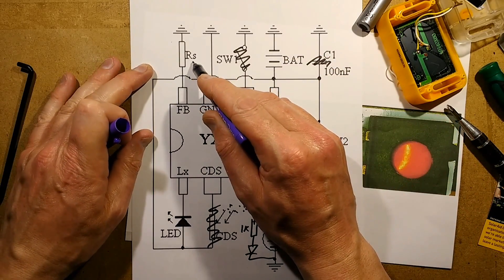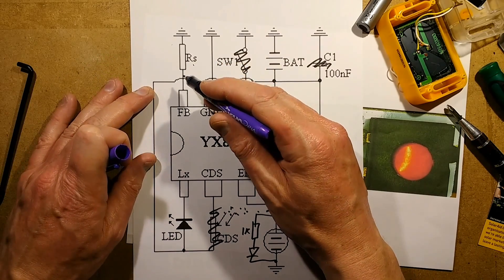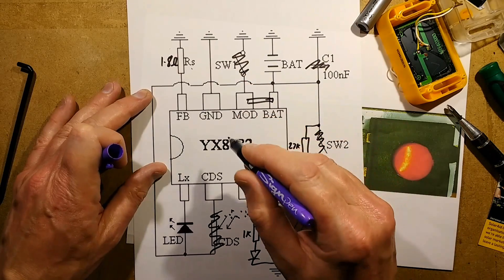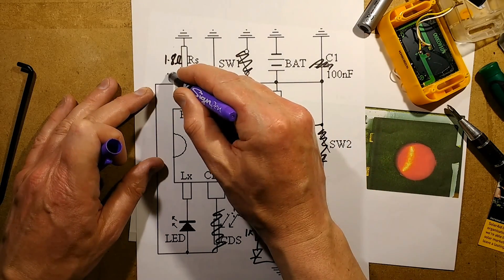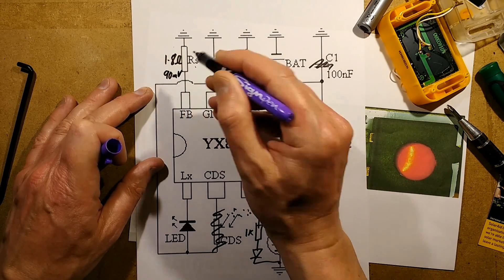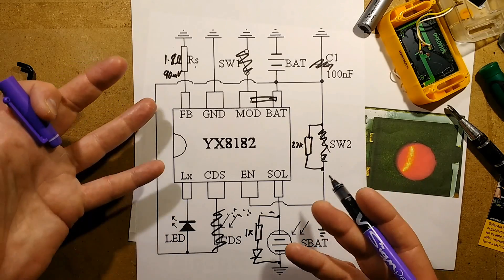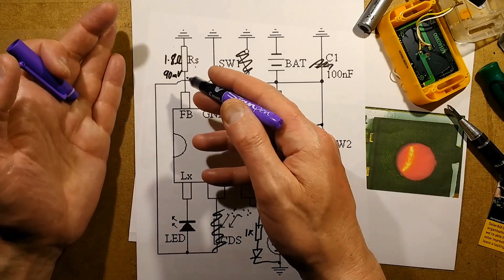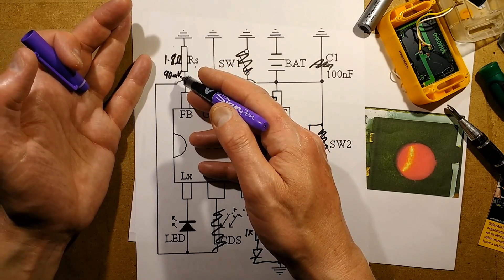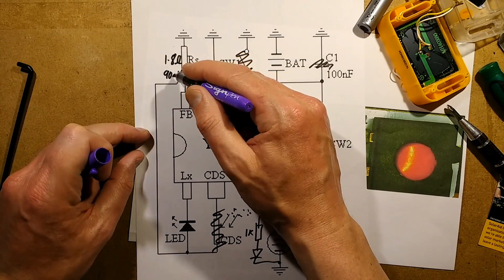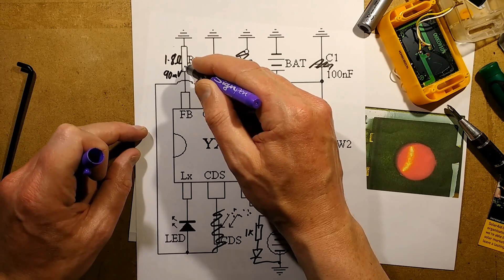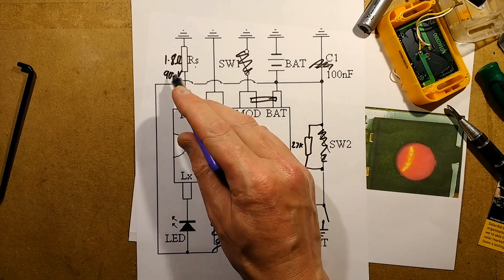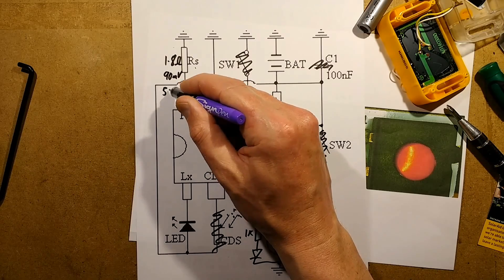There is a sensor resistor here which had a value of 1.8 ohms, and that is used with a reference voltage inside of about 90 millivolts to set the current through the LED. If you want a higher current, use a lower value resistor, and if you want lower current, use a higher value resistor. As soon as the voltage across that resistor reaches 90 millivolts, it will cap the current at that level. In this case, that equates to dead-on 50 milliamps.